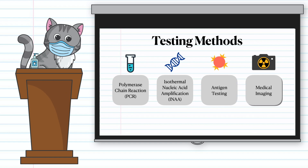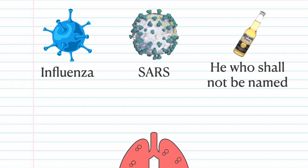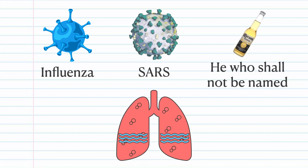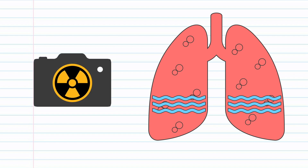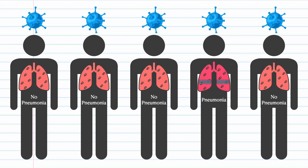Medical imaging is another method by which we can diagnose patients with a viral infection. Viruses like influenza, SARS, etc. often lead to pneumonia, which is sometimes visible on chest x-rays, helping doctors identify if an infection is present. However, this is not always accurate, as respiratory infections don't always lead to visible changes in a patient's lungs. For example, you could test positive for the flu but have absolutely no pneumonia.